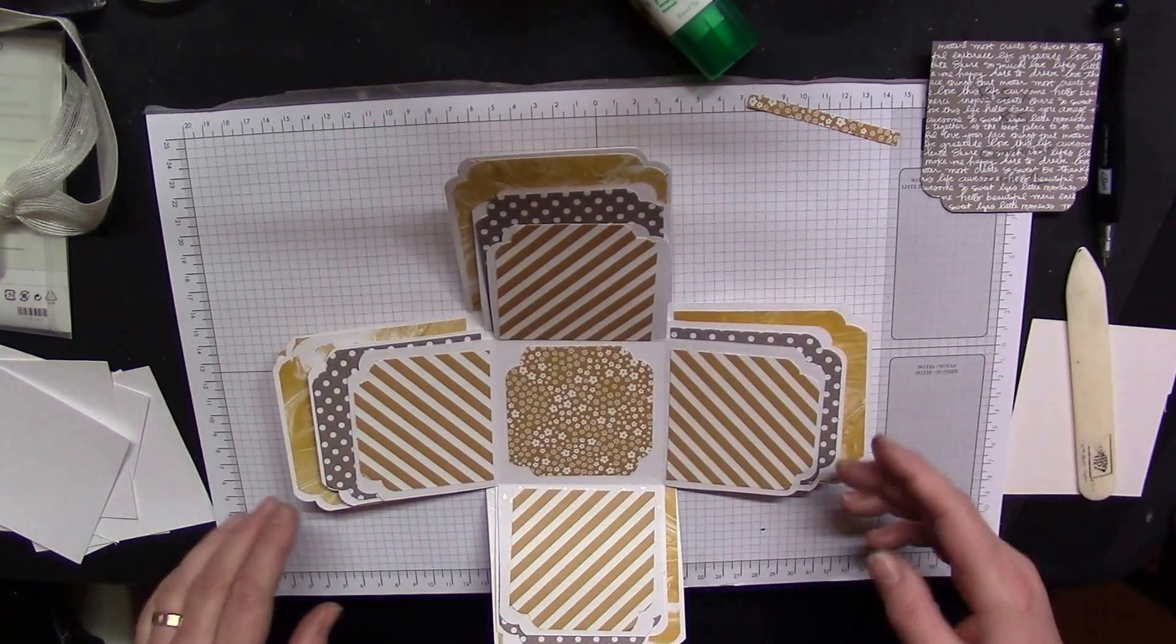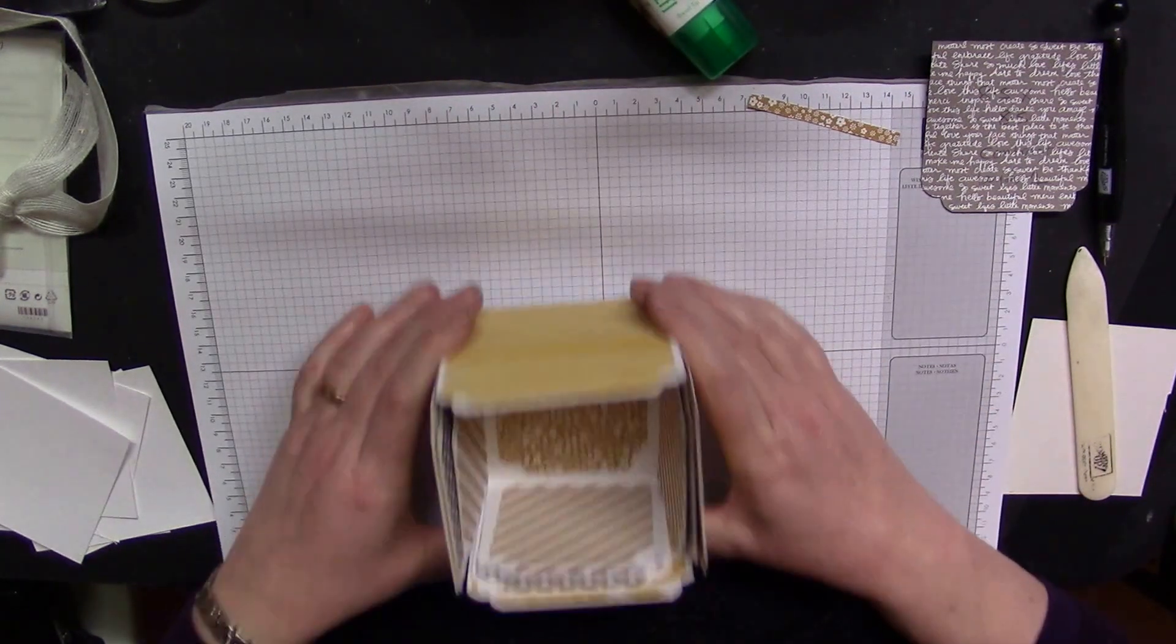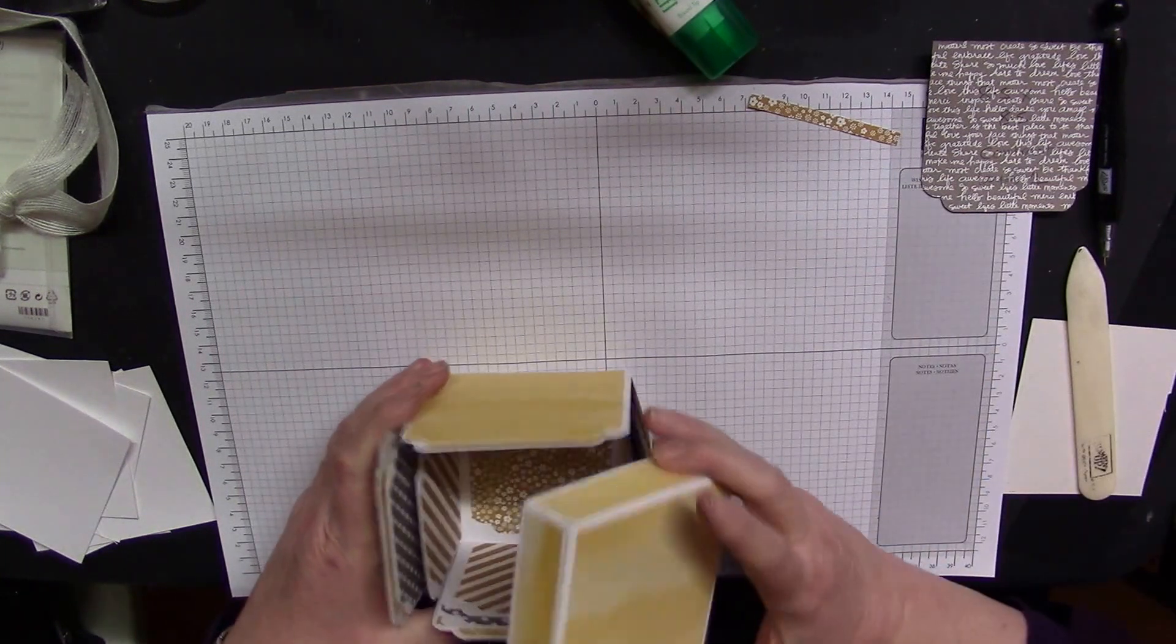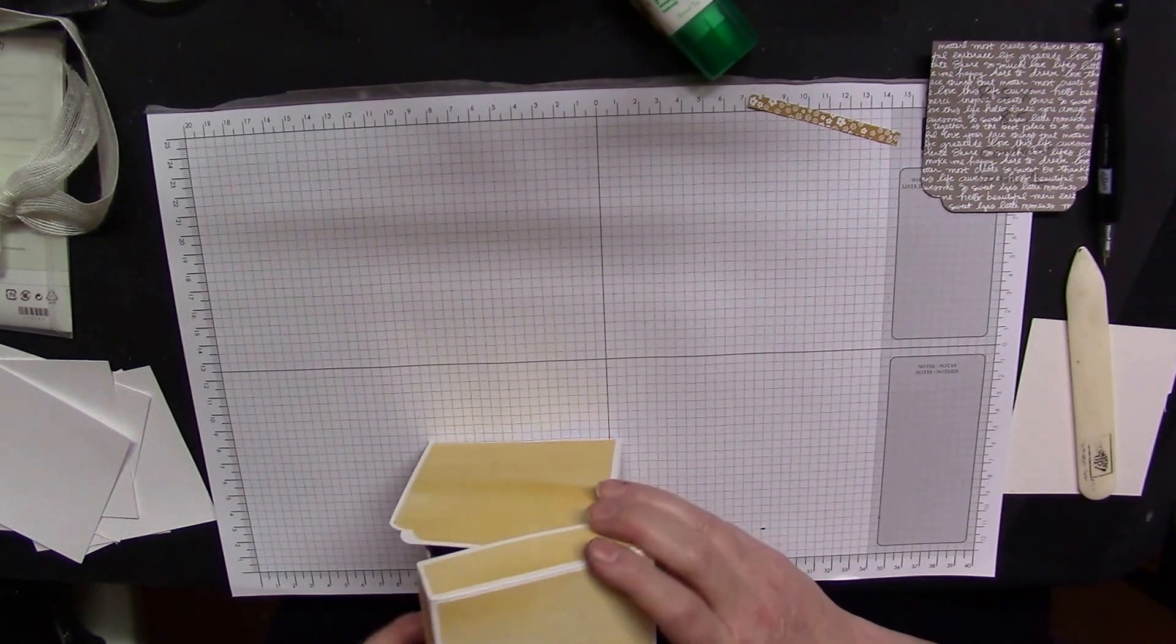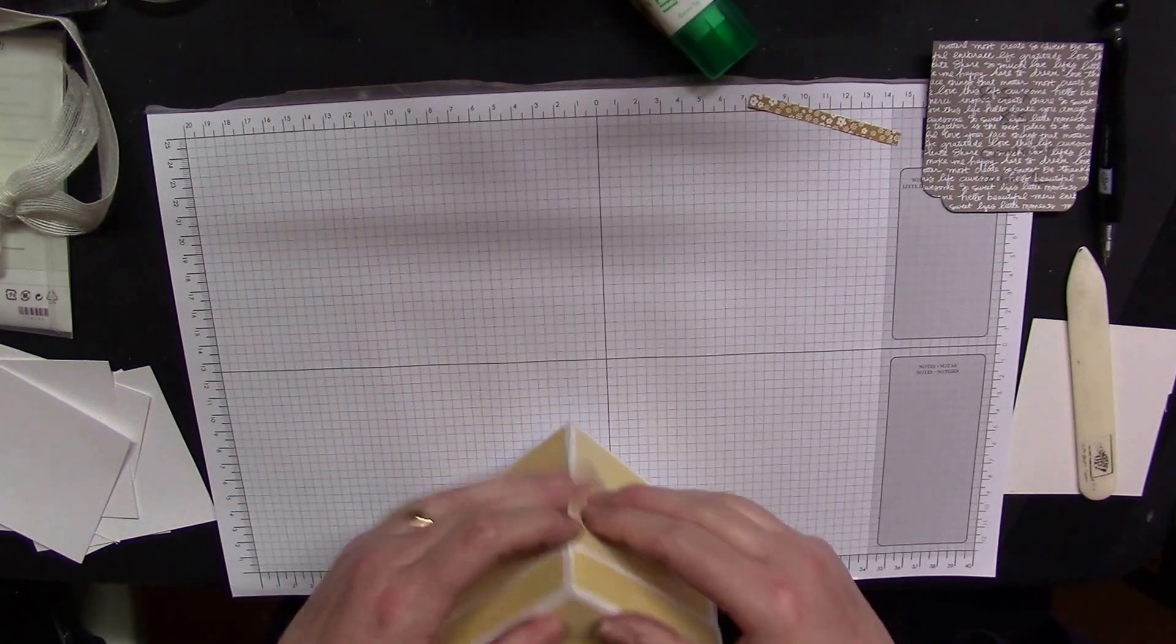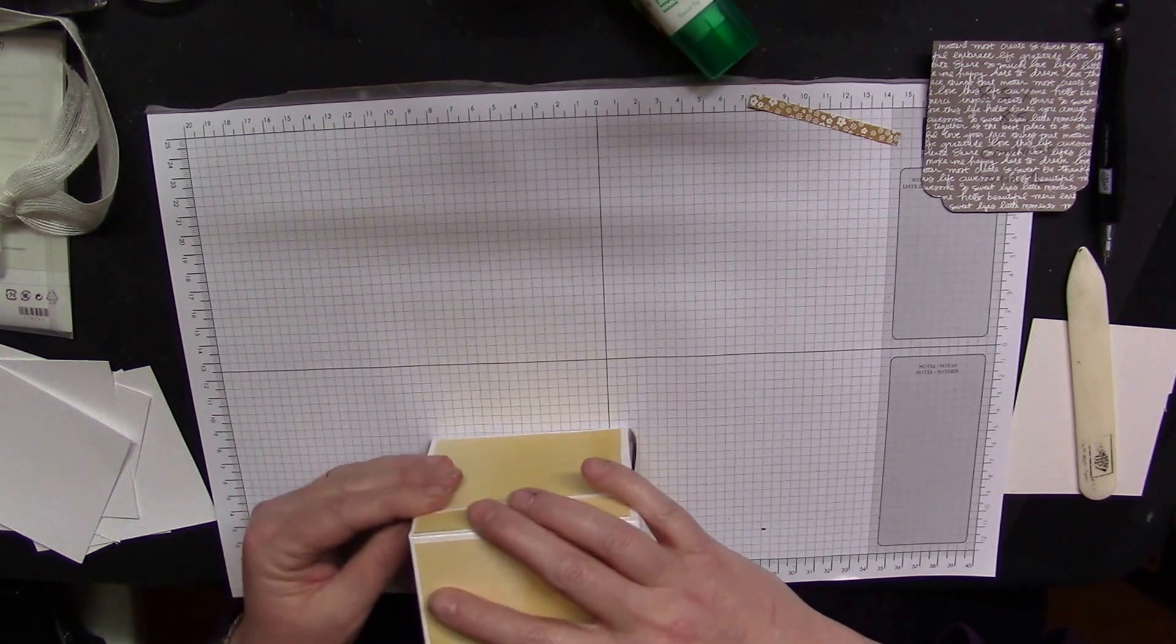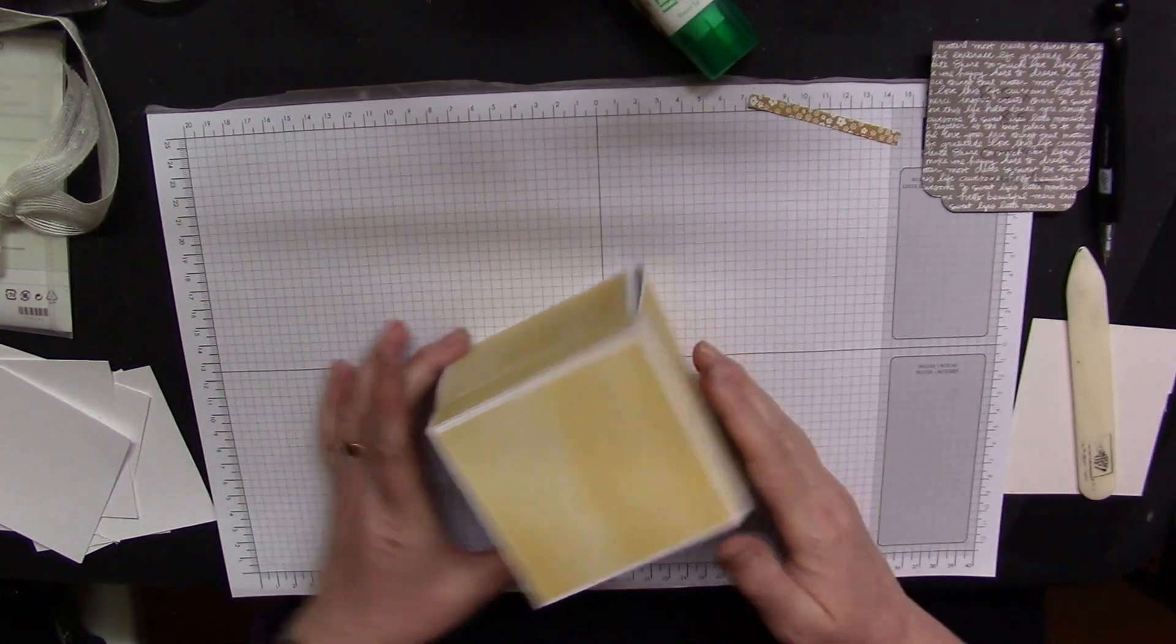Right, so this then, your lid goes on over the top. It is a tight fit and is intended to be a tight-fitting lid because otherwise the flaps, believe me, would find their way out. There you are, one pretty box.